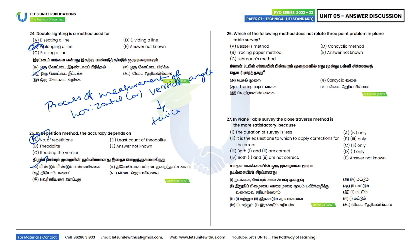Twenty-sixth question: Which of the following methods does not relate to the three-point problem in plain table survey? The answer is the traversing method — tracing paper and Lehmann's method both relate to the three-point problem. Option B is the correct answer.